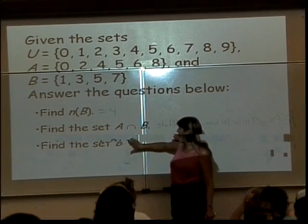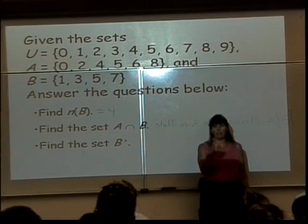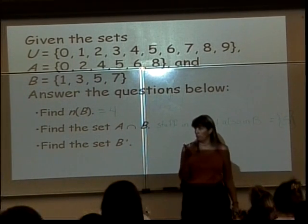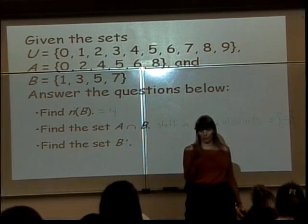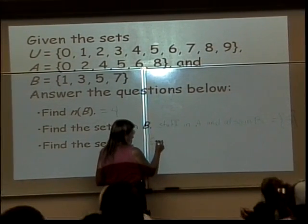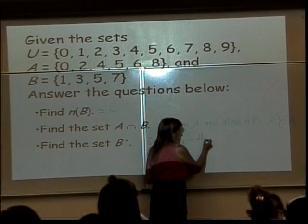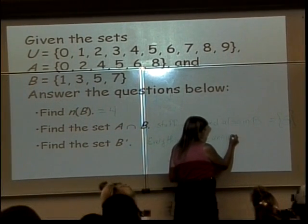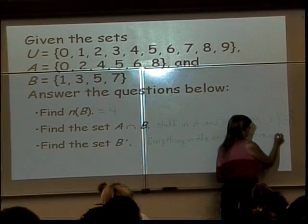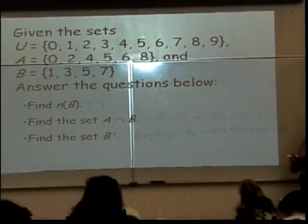Find the set B complement. One thing it tells me is that I'm only interested in set B. Set A is not part of this. The complement part tells me that I also have to look at the universe for my problem. So B complement is everything, everything in the universe that is not in B.